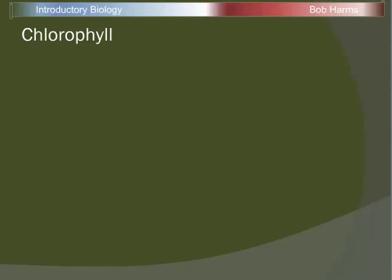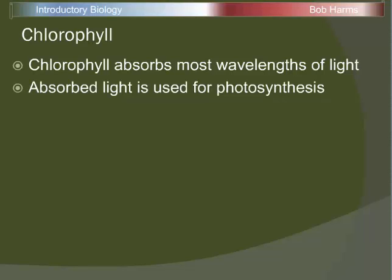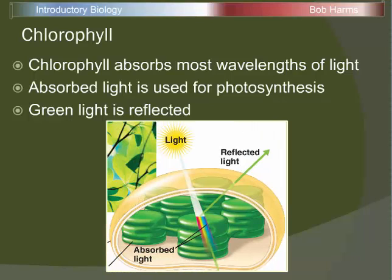Chlorophyll is a main ingredient in this process of photosynthesis because chlorophyll is absorbing the light energy, making that crucial step of going from solar to chemical energy. Chlorophyll is very good at absorbing light of most wavelengths in the visible light spectrum. The one color that chlorophyll does not absorb is green light — green light is reflected or bounces off the chlorophyll, and that's why our eyes pick up that green color when we look at plants.